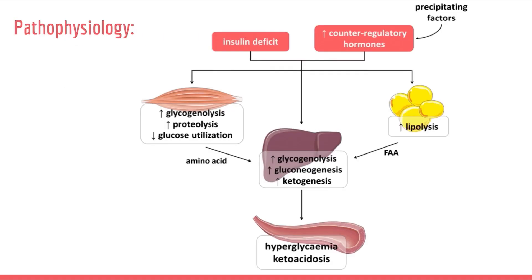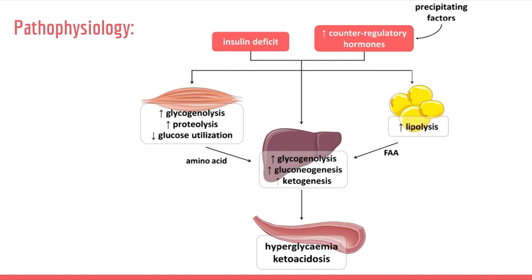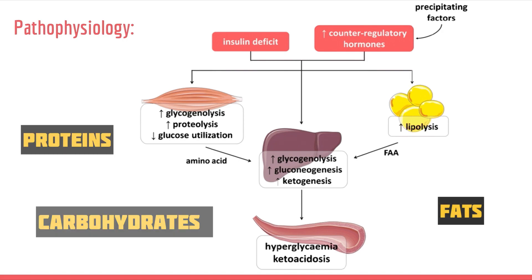The pathophysiology involves two main things: one is insulin deficit, and the other is an increase in counter-regulatory hormones like glucagon and cortisol. There is always a precipitating factor, leading to a disruption in the metabolism of carbohydrates, proteins, and fats.